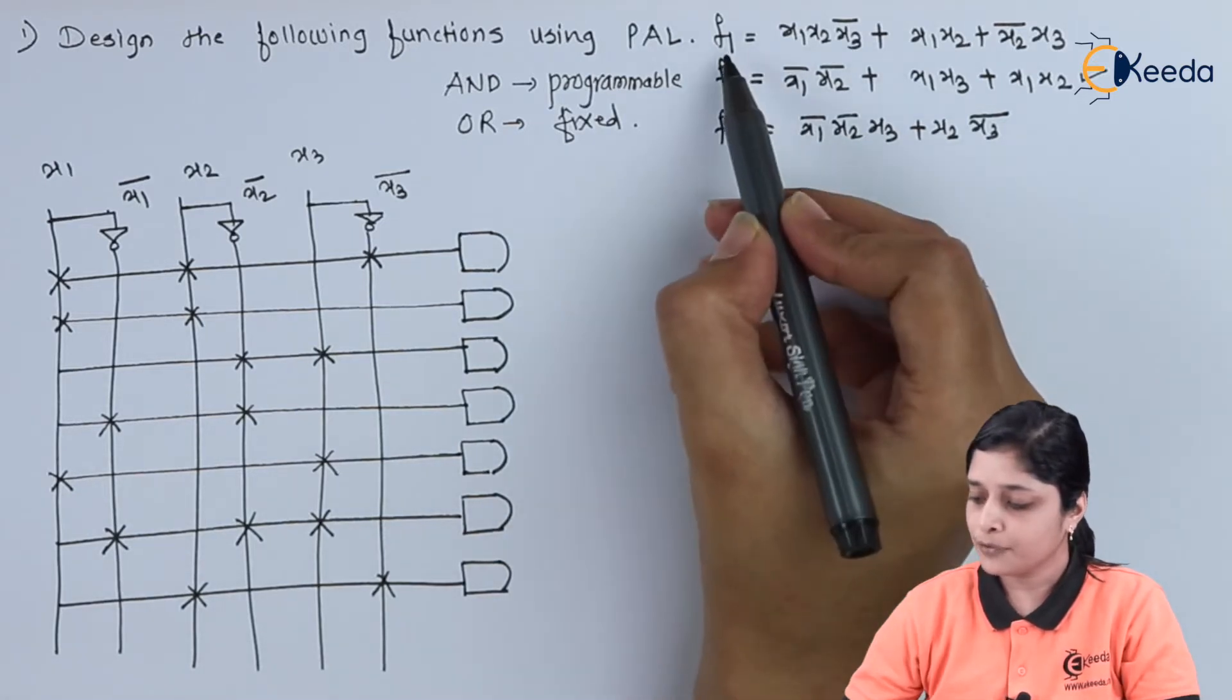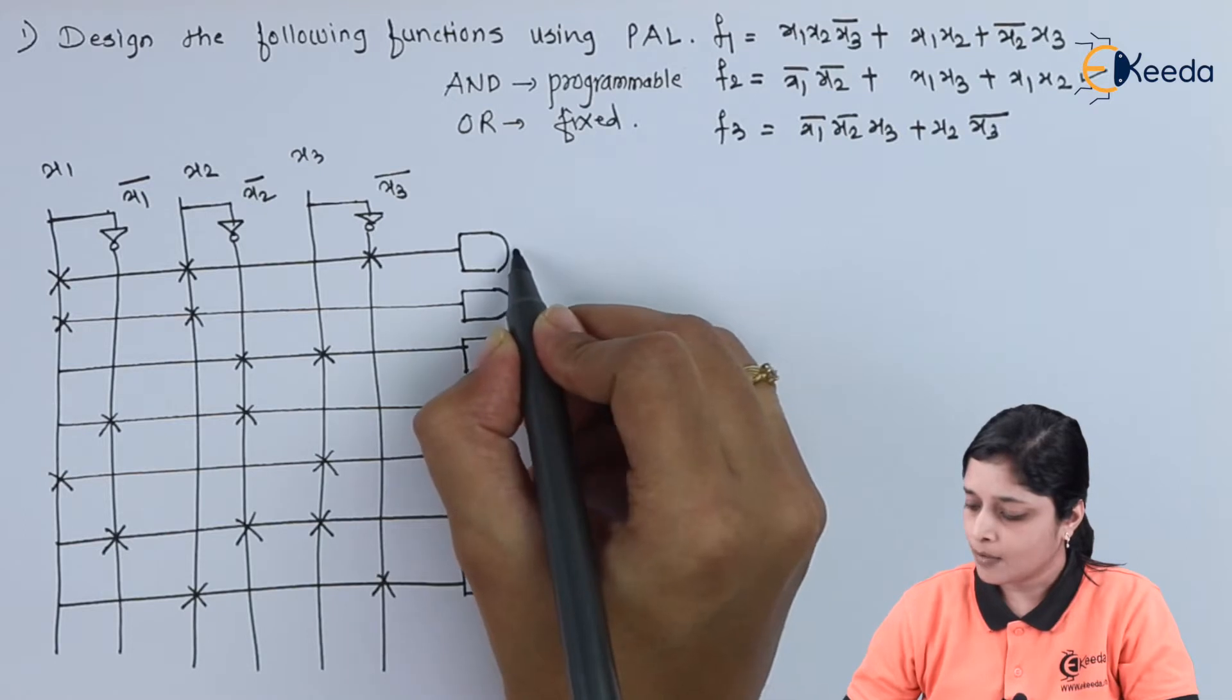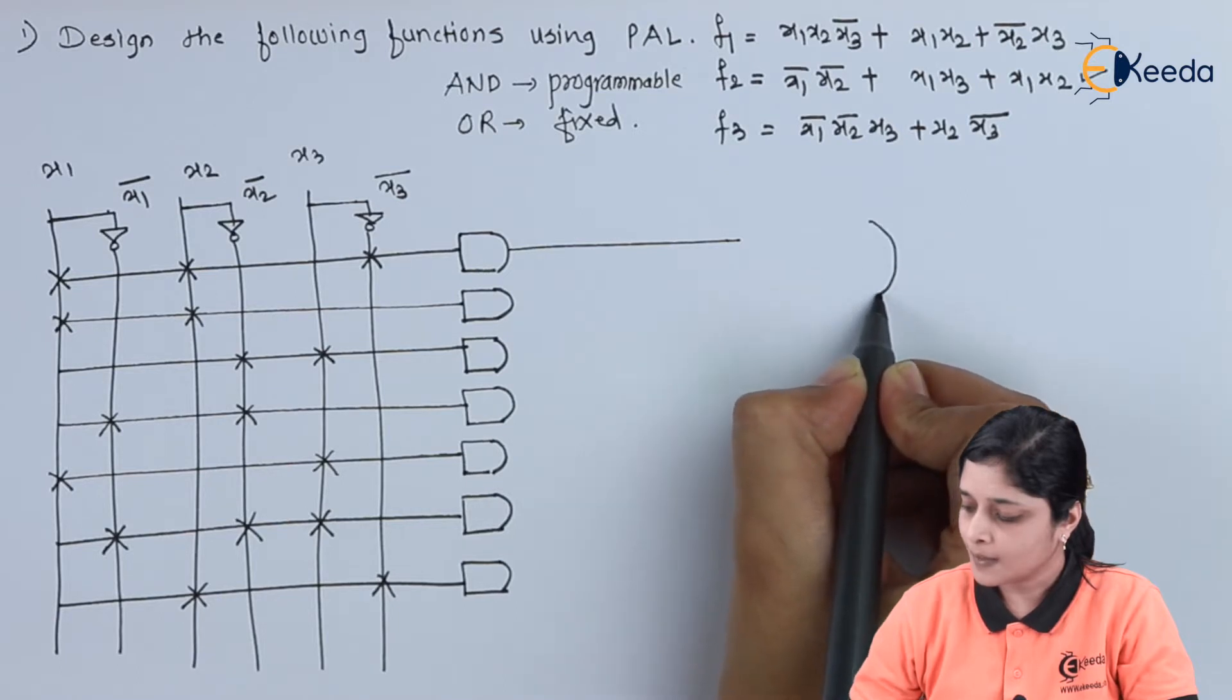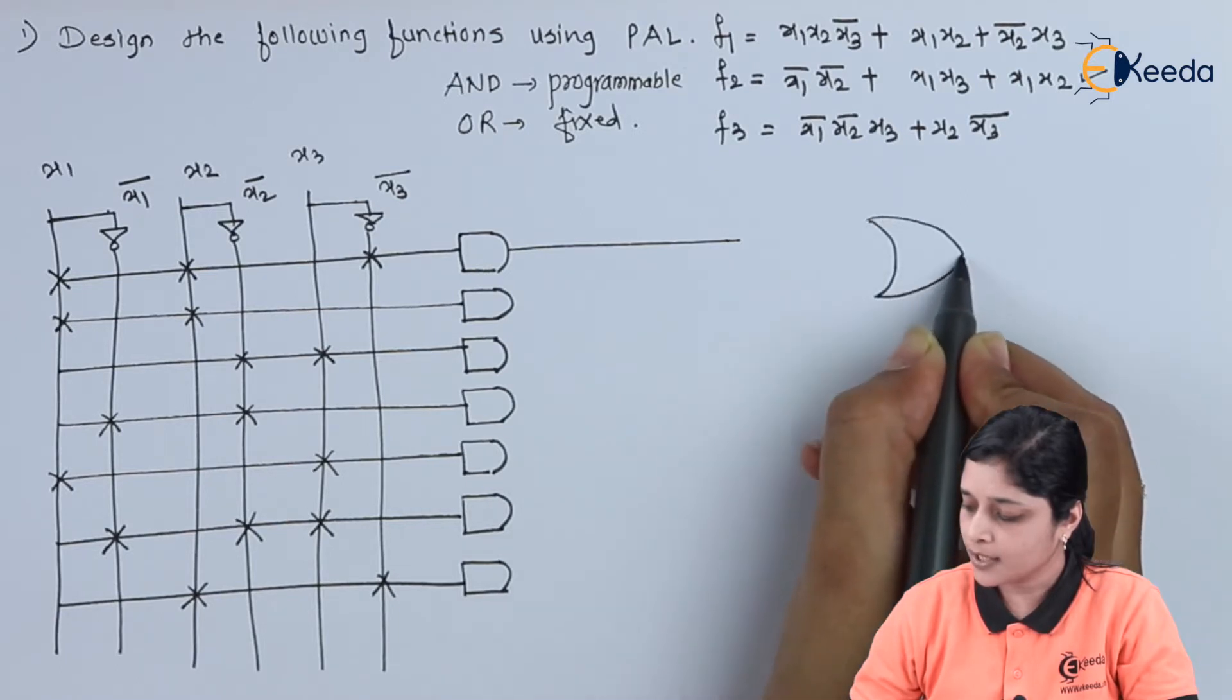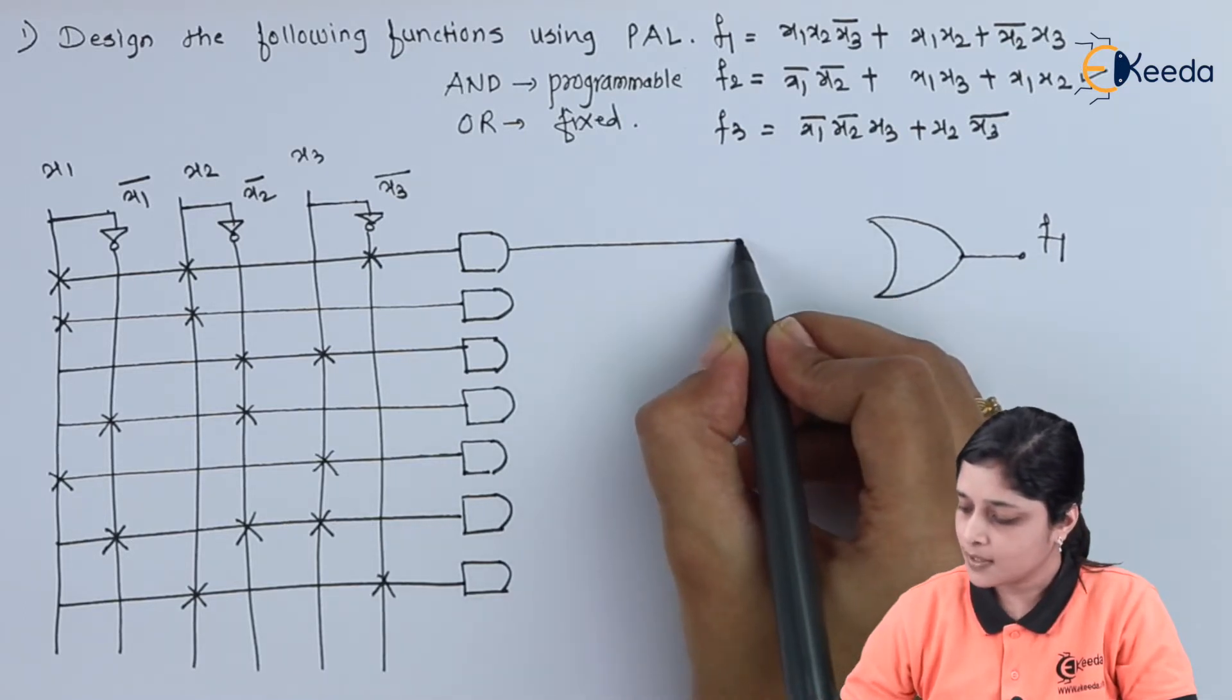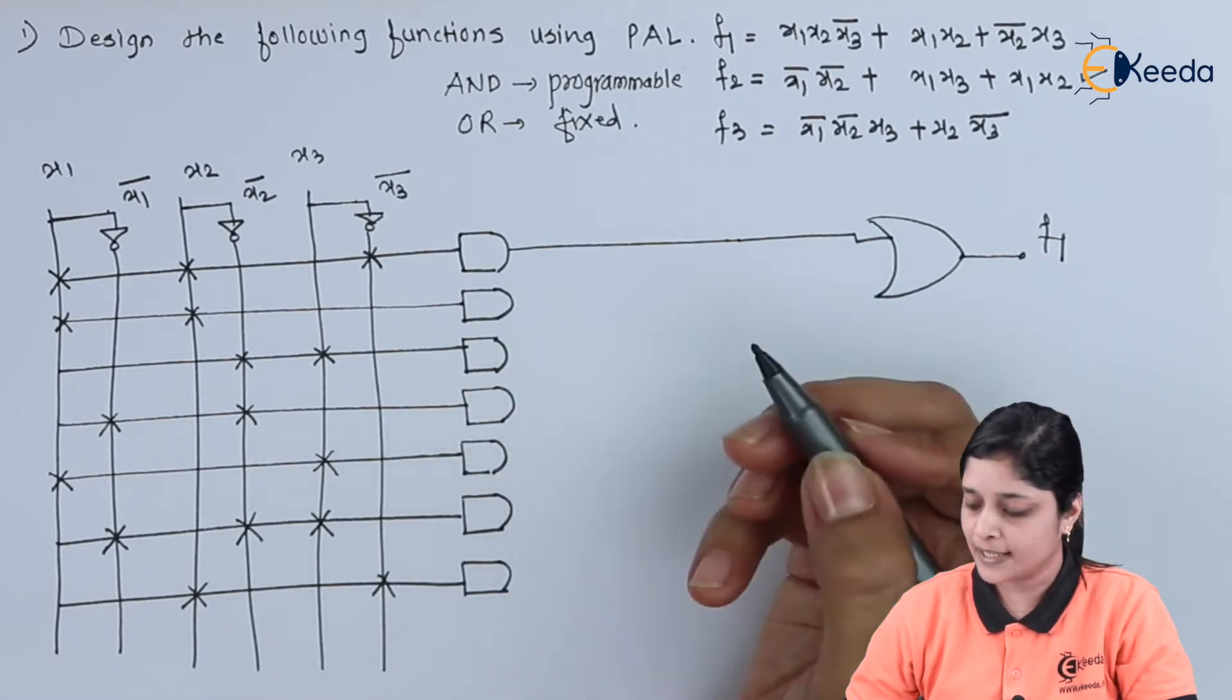After that, you have to find out F1. For that, you require the outputs from first AND gate. This is your OR gate for output F1. So this is the first output for AND gate.